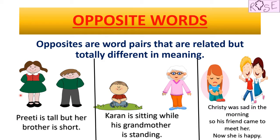Let us look at the first picture and read the first sentence. Preeti is tall but her brother is short. In this sentence they are talking about the children's height. There are two words indicating their height: tall and short. Both of these words are related to the word height, but their meanings are totally different.